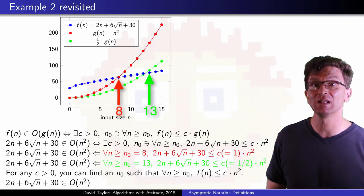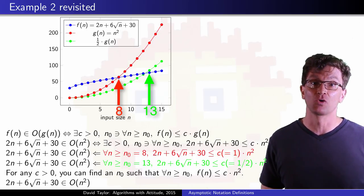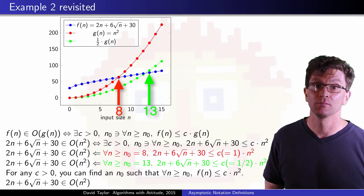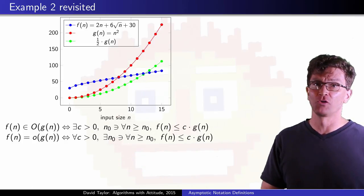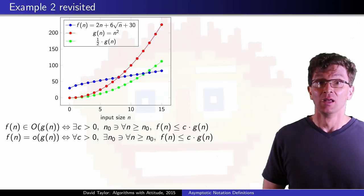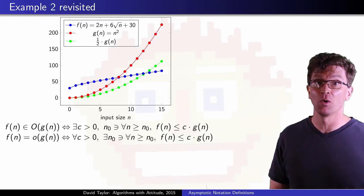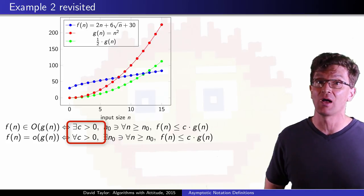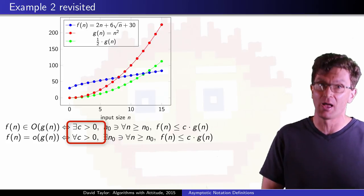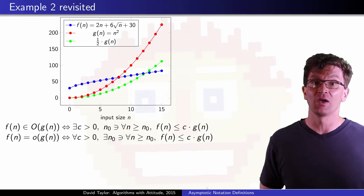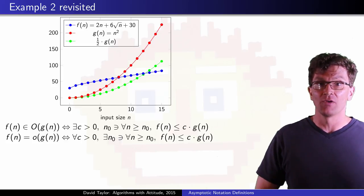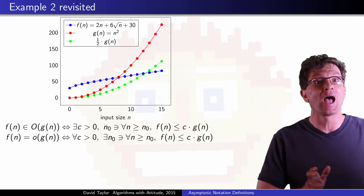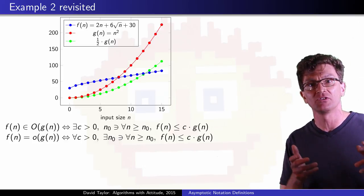f(n) is in the set little o of g(n), if g(n)'s growth strictly dominates the growth of f(n). I'll put up my rule for inclusion in the little o set here. It's similar to the rule for big O, except that instead of requiring the existence of at least one positive value c, it has to work for all positive c values. So f(n) is in the set little o of g(n), if for all c > 0, there exists n₀, and the rest of the rule looks the same as the big O rule.